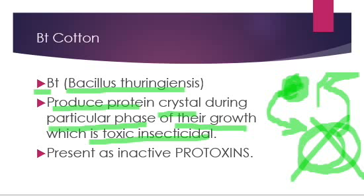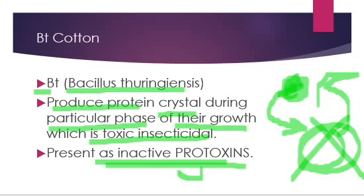Then why didn't it kill the Bacillus itself? Ye particular toxin bacillus ke under hi present tha. This is because it is already present in an inactive form, and its name is pro-toxin. Pro means primitive and toxin means the toxic substance — it means it is not in an active state. It cannot kill a particular organism in the pro state. It needs to be activated.